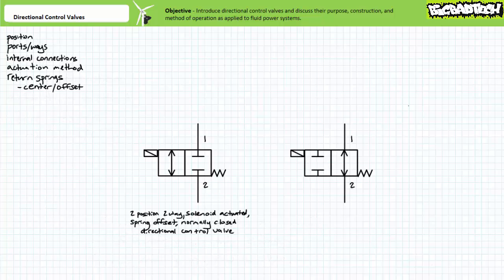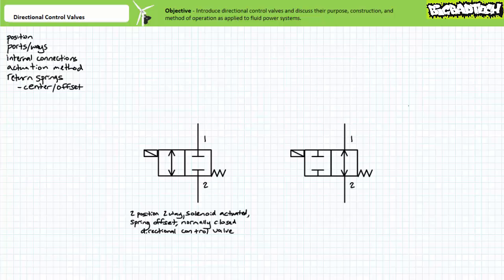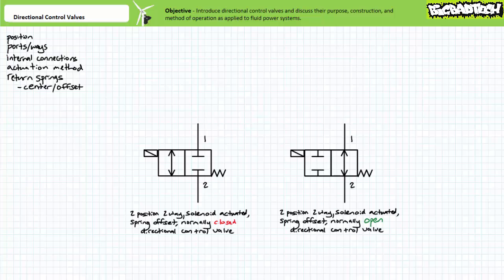Consider a subtle modification of this valve. This directional control valve is almost identical to our first example with one major exception: it is also a two-position, two-way solenoid-actuated directional control valve, but it is spring-offset into a normally open position. The behavior is fundamentally different — in the absence of an electrical pilot signal, fluid can flow. In the presence of an electrical pilot signal, fluid flow is blocked.